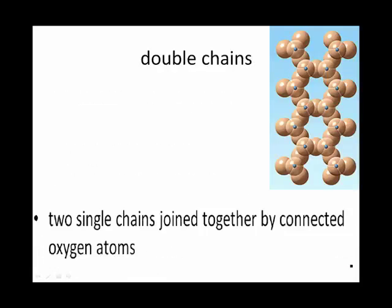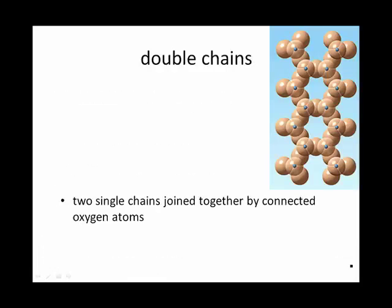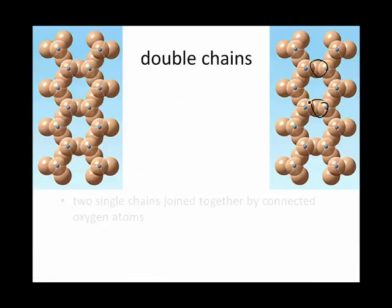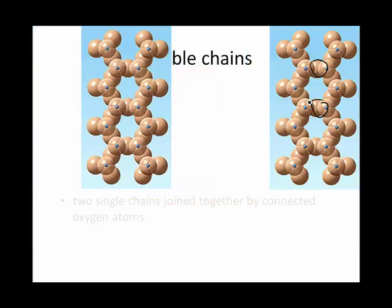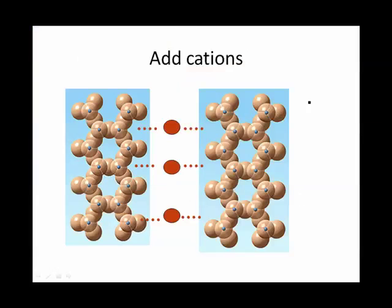Double chains also occur. That is, two single chains joined together by a common oxygen. Of course, two double chains will repel each other. How do you get them to stick together? Of course, simply add cations. And once again, those ionic bonds will be the weaker bonds. And that's the way the mineral will tend to break.